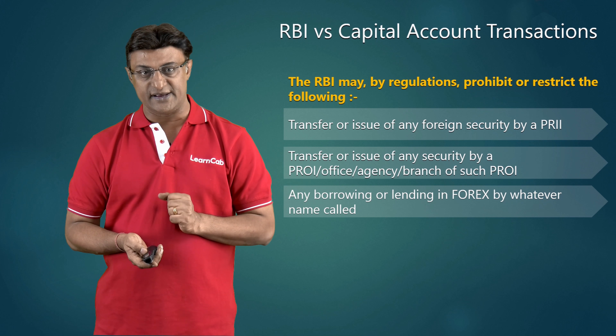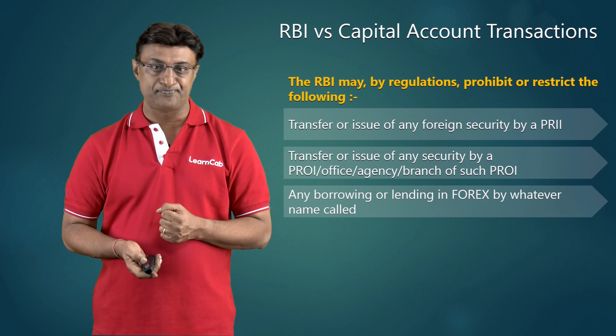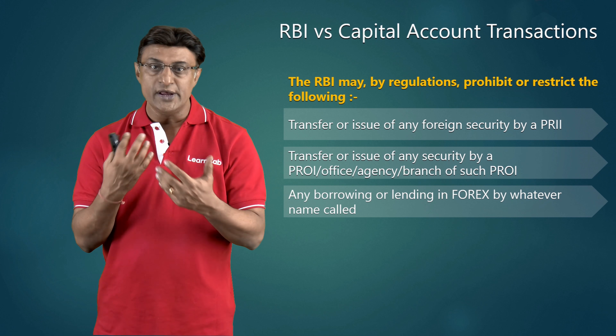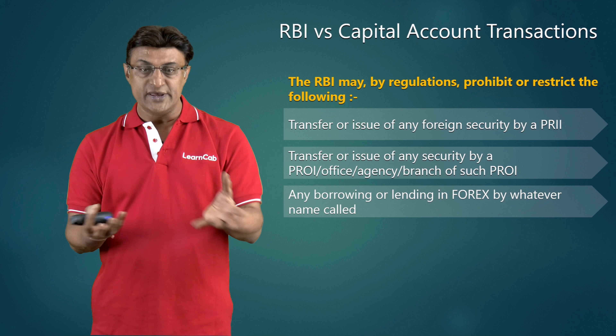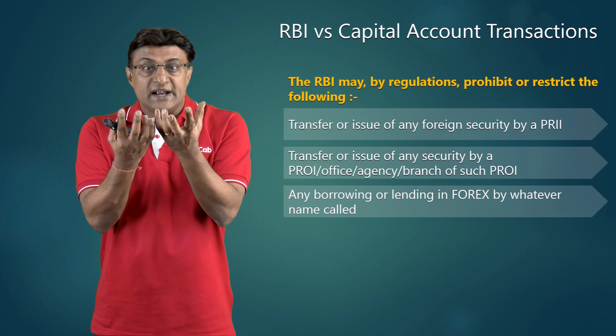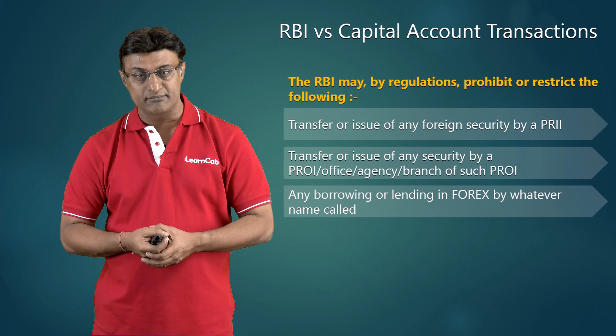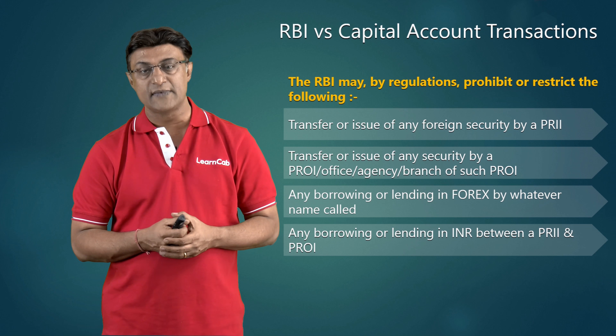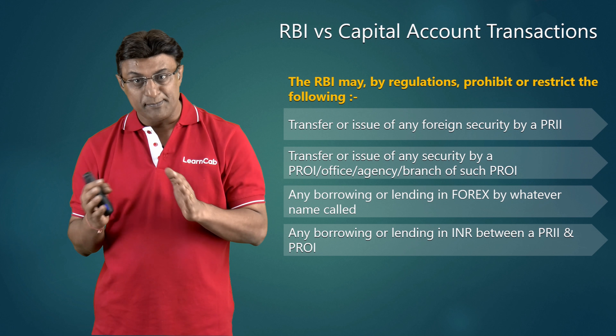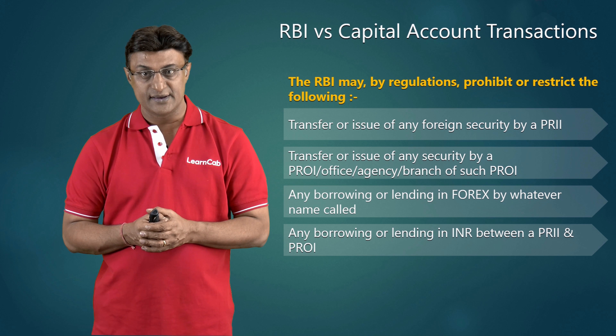Both involve securities. One is transfer or issue of any foreign security by a person resident in India — you will need foreign exchange for this, and it is a capital account transaction because investment is an asset, and anything that moves an asset upward or downward is a capital account transaction. The RBI may, by regulations — with central government rules — prohibit or restrict such transfer or issue of a foreign security by a person resident in India or its office, agency, or branch.